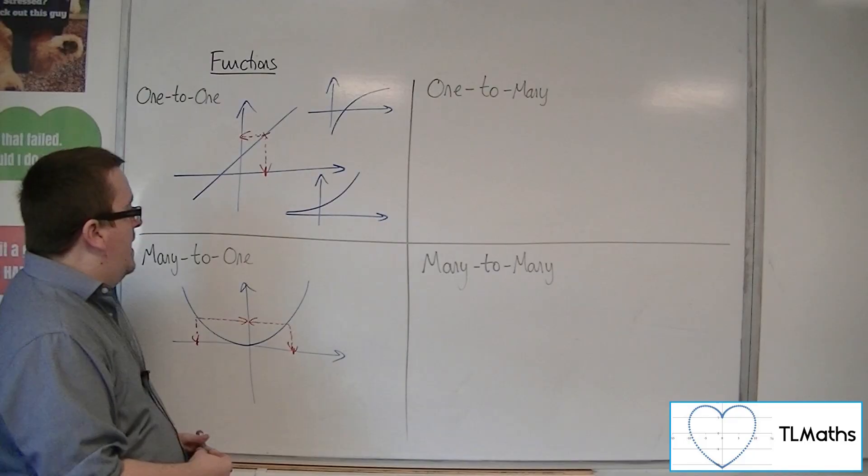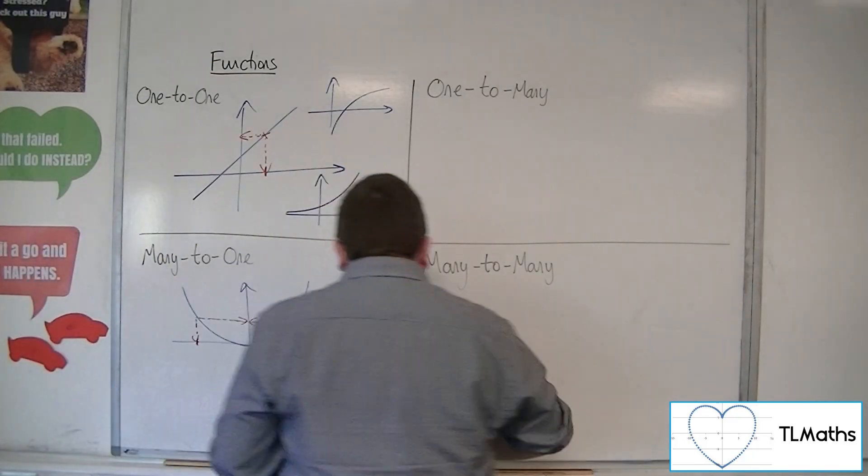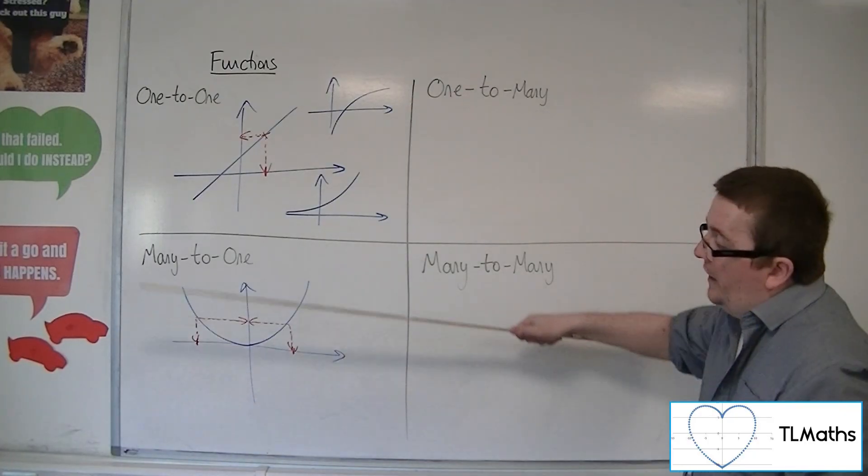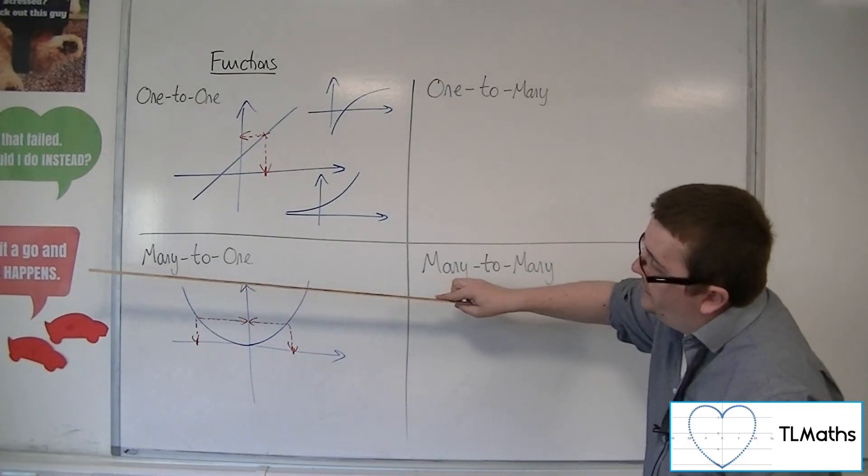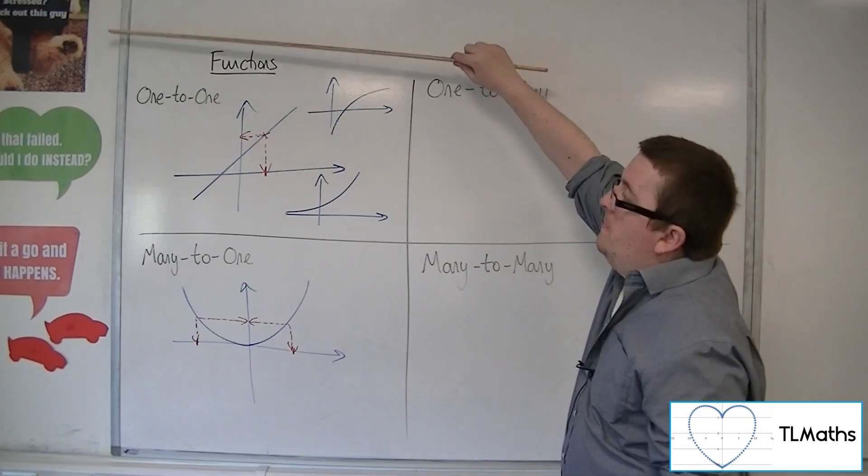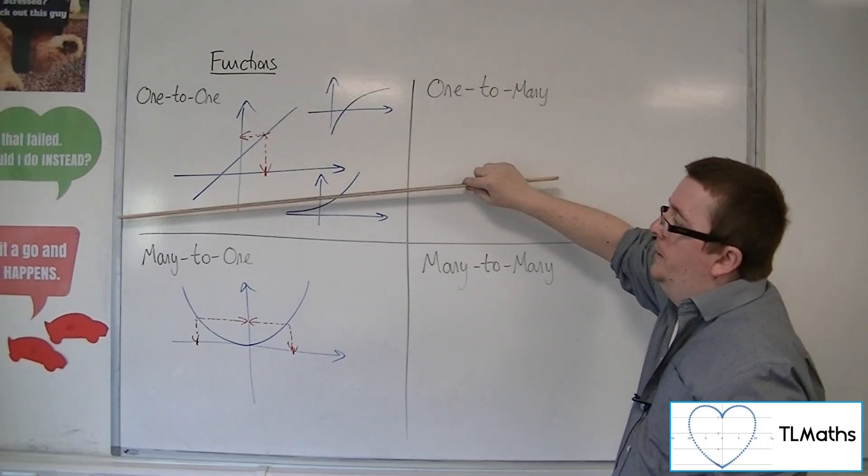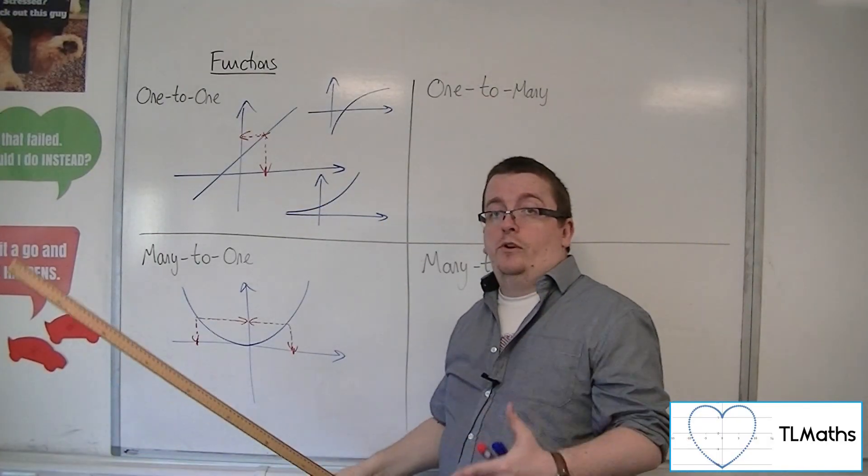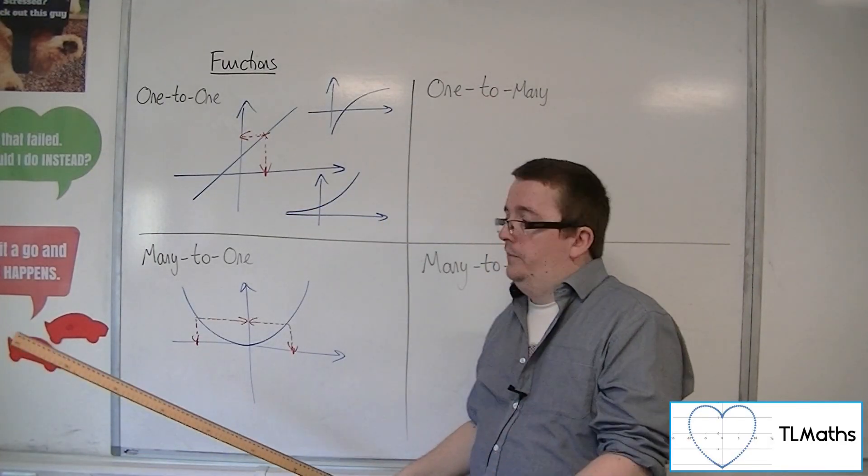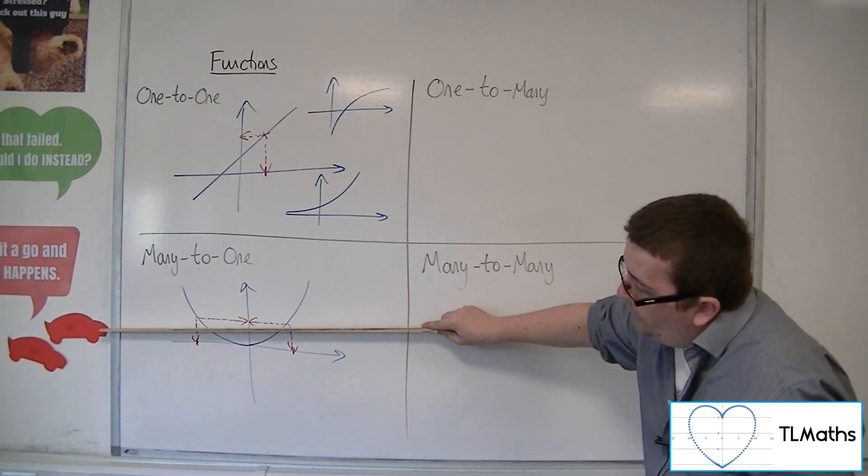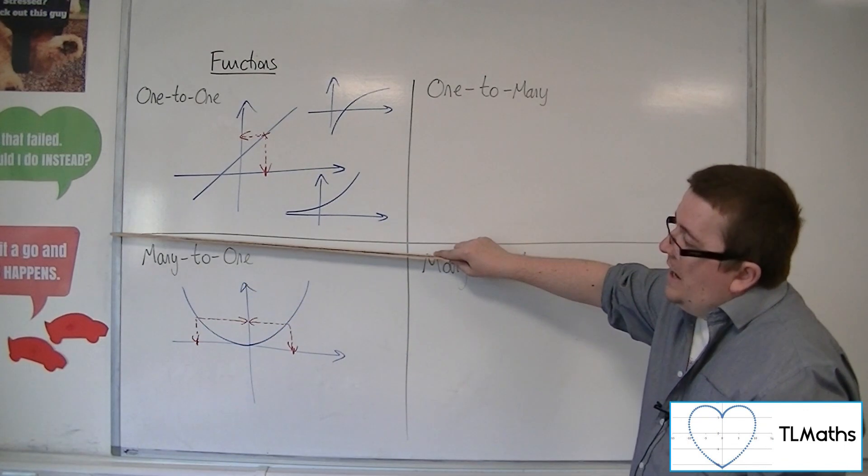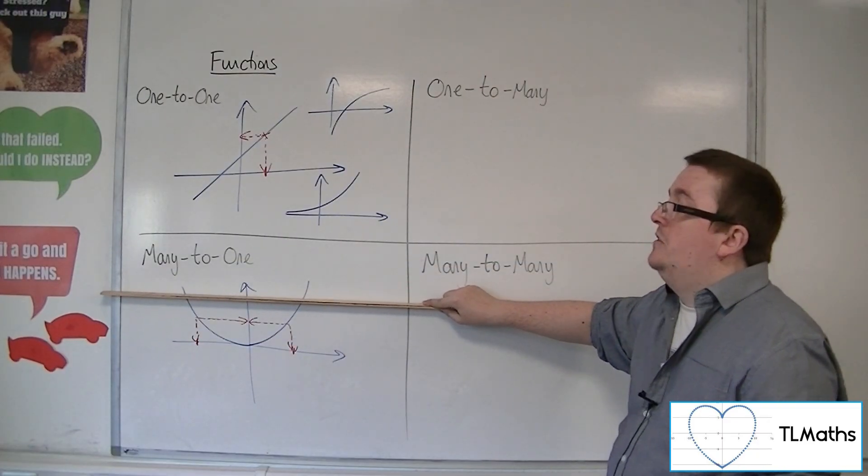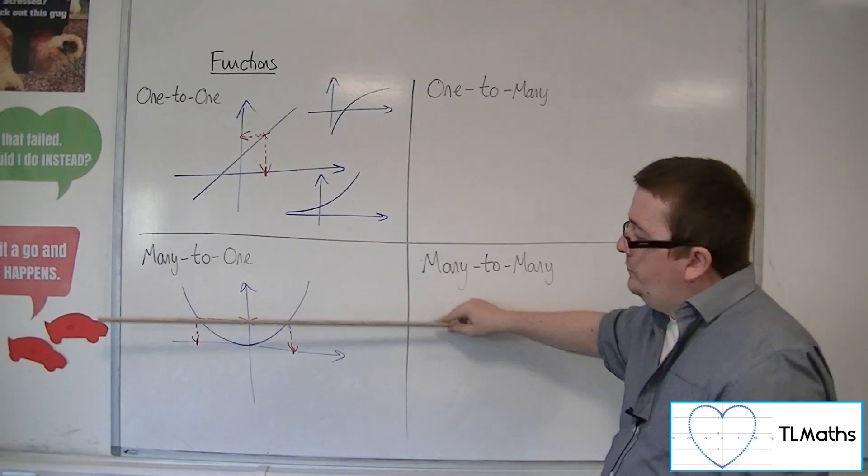This is a curve that would be many-to-one. You need to consider the horizontal straight line test, where no matter where I am on a one-to-one graph, if I drew a horizontal line, it will only ever cross the curve once. Here, if I draw a horizontal line, if it crosses the curve at any point more than once, then it is many-to-one.